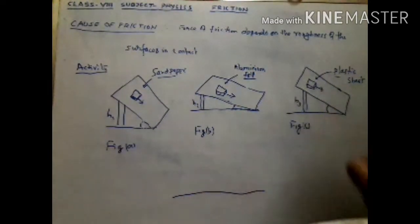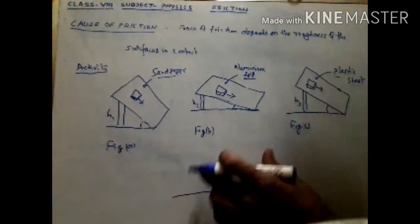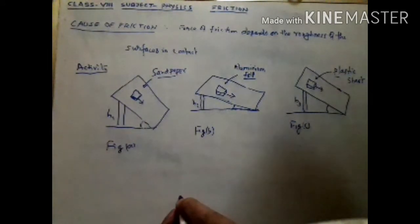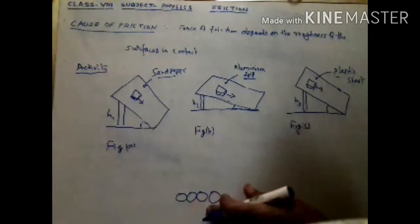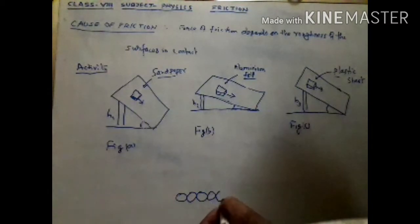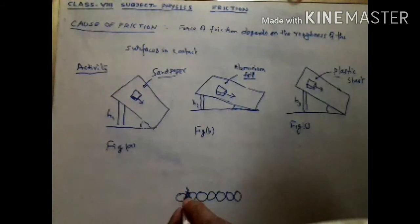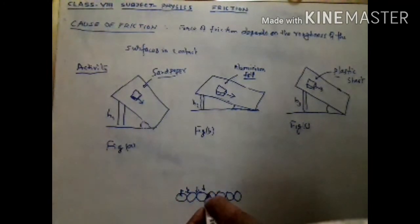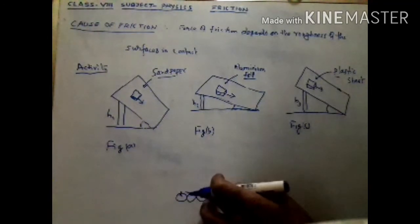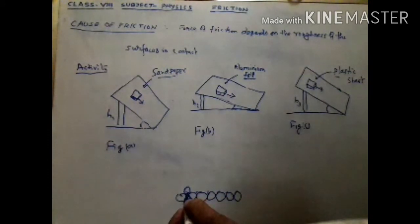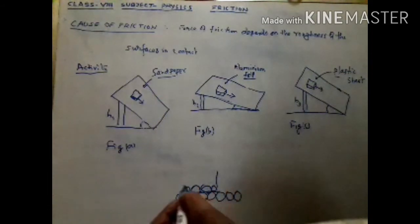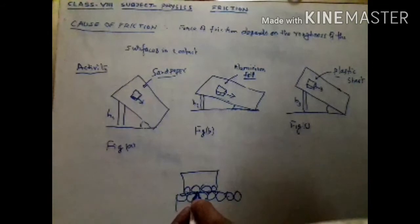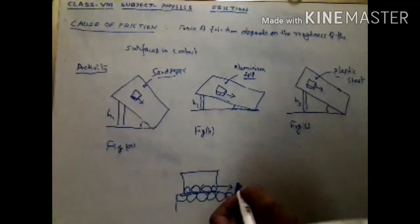Suppose we consider a surface — but the surface is not actually flat. When we do a micro analysis of the surface, we observe that surfaces are made up of molecules, and these molecules are closely bound with each other. So when they are closely bound, there are valleys and peaks. When any other object is placed here, the peaks of that object fit into the valleys of this surface. So the two surfaces in contact have interlocking due to this roughness.